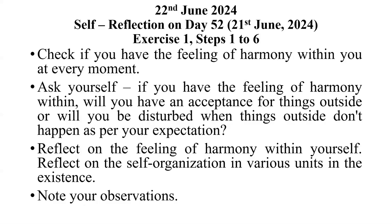In step 6, we are trying to make out what is to be understood. If I have to ensure right understanding, what do I understand? Now, again, we start looking within and try to investigate into my natural acceptance. Because through some explanation, I have been able to see that if I pay attention to my natural acceptance, I can have clarity. So I start looking at my natural acceptance — is it for relationship or opposition, harmony or disharmony?